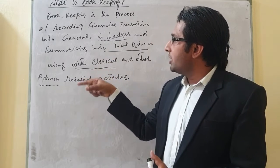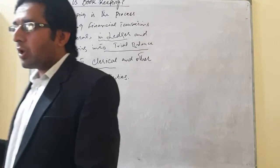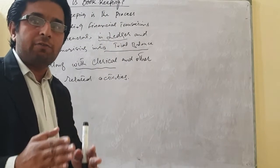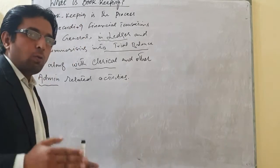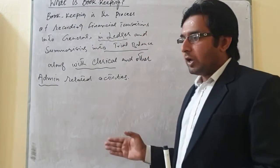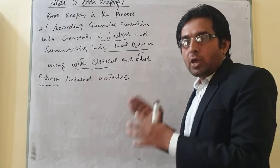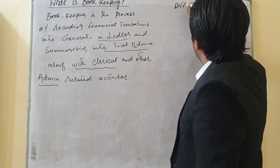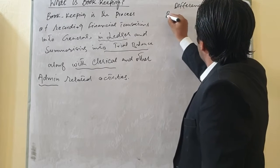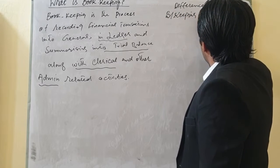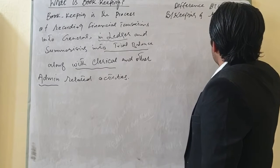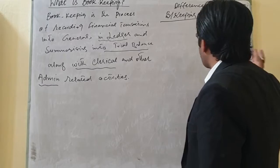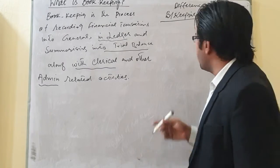These activities come into the category of bookkeeping. This is the scope of bookkeeping. Students are mostly confused between the difference of accounting and bookkeeping. We can understand this better through the accounting cycle, to distinguish between the two. Let's start with the difference between bookkeeping and accounting — we can best understand this difference through the accounting cycle.